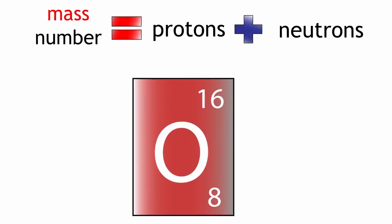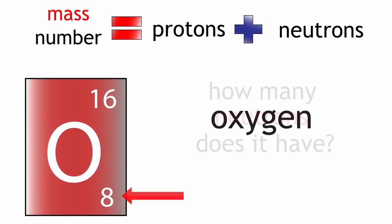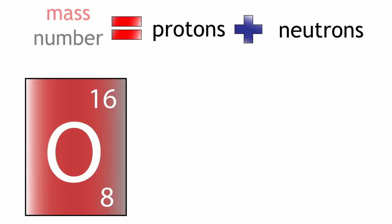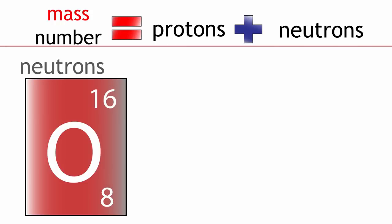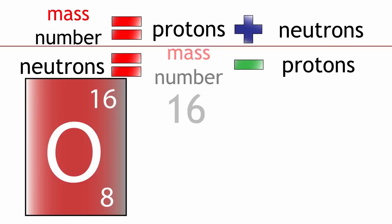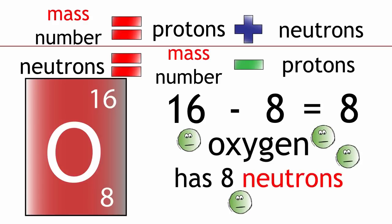So if we take oxygen: oxygen has a mass number of 16 and has 8 protons. But how many neutrons does it have? Remember, mass number equals protons plus neutrons. We can rearrange this to show that neutrons equals mass number minus protons. Neutrons equals 16 minus 8 equals 8. Oxygen therefore has 8 neutrons.